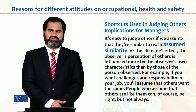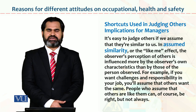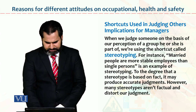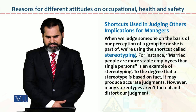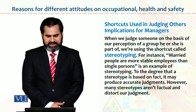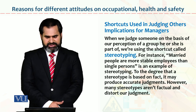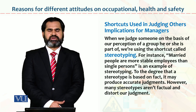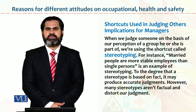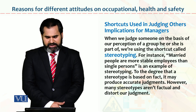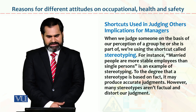This shortcut approach to judging is not a better approach. When we judge someone on the basis of our perception of the group he or she is part of, we are using the shortcut called stereotyping. For example, assuming all the rest of a group of 5 people share the same traits — that is stereotyping. Stereotyping is not right.